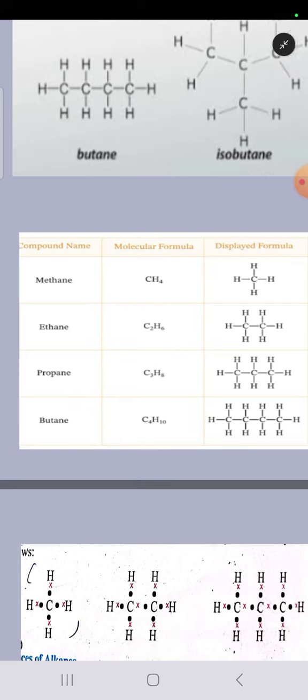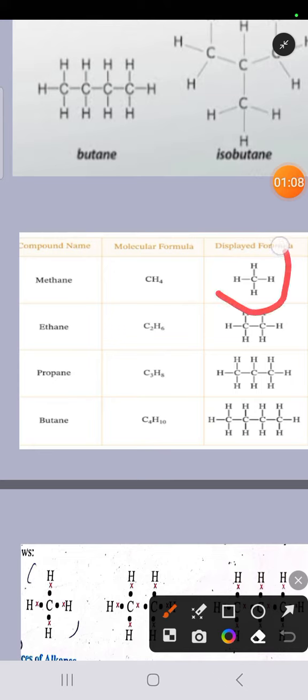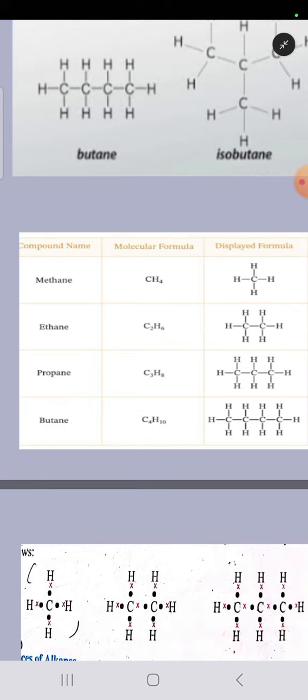The successive members of this series differ from each other by a CH2 group. The first member is methane, having one carbon and four hydrogen atoms. The second member is ethane, having two carbon atoms and six hydrogen atoms. They differ from each other by a CH2 group. In the same way, ethane and propane also differ by a CH2 group.